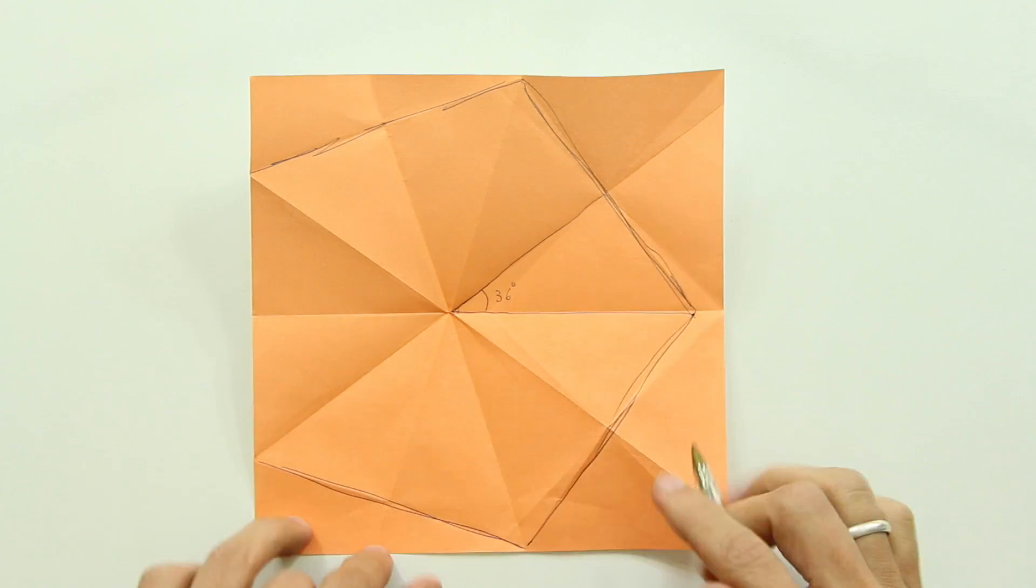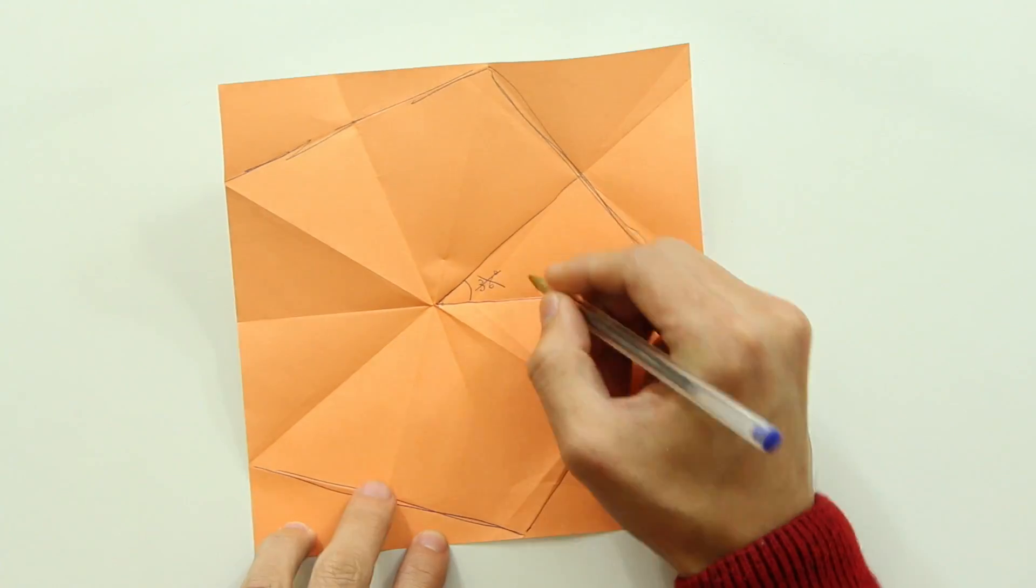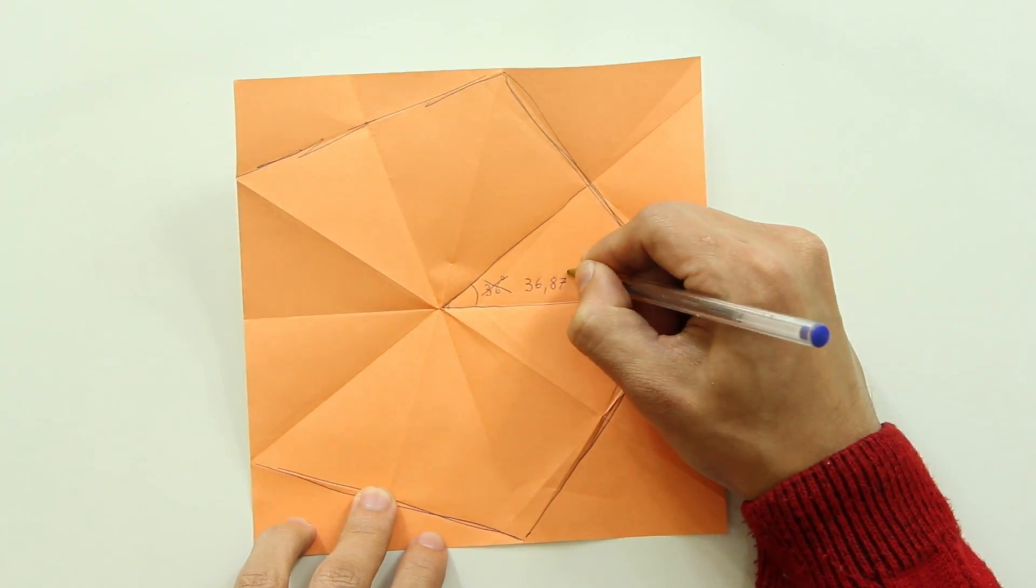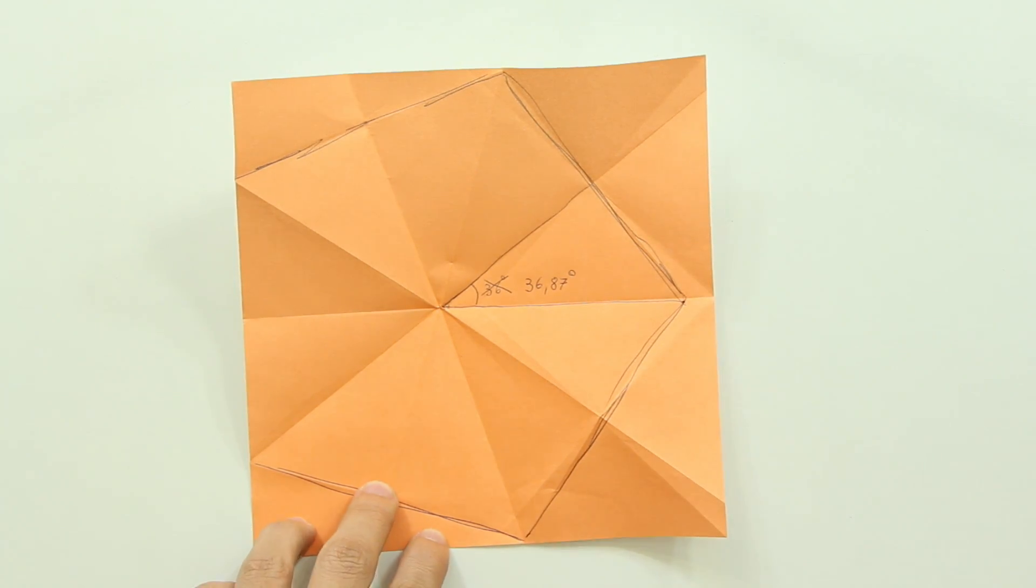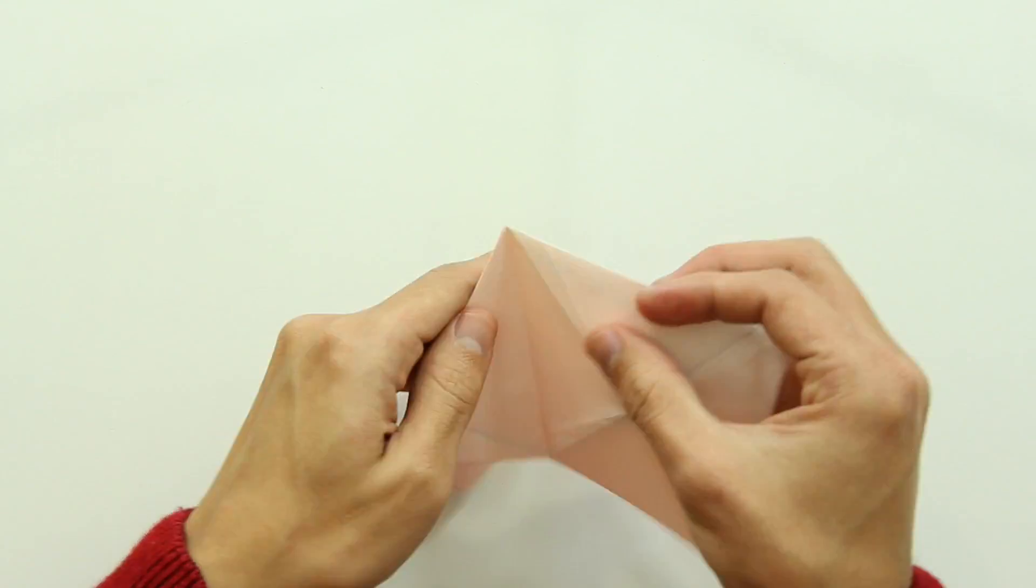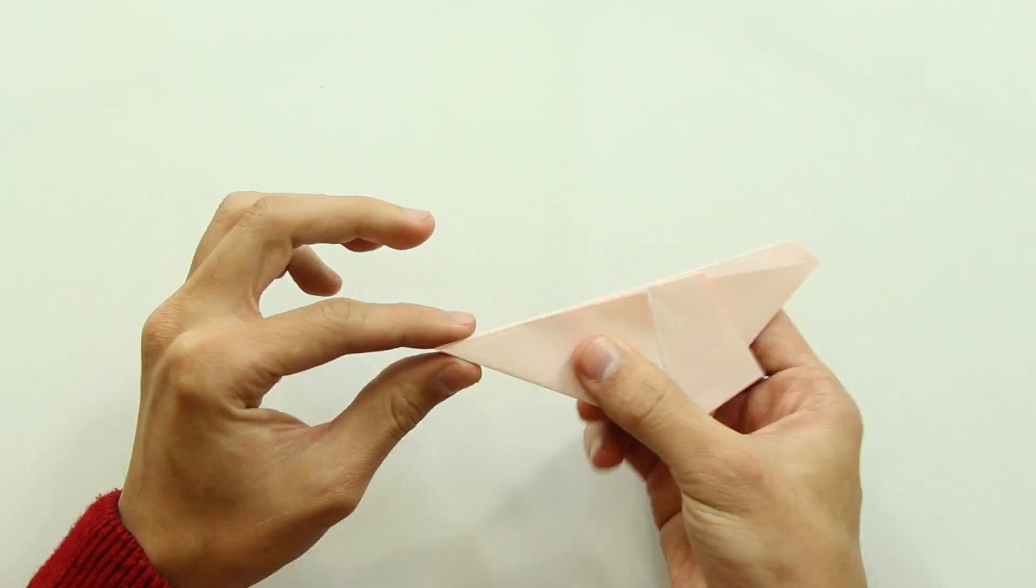Well, to be a regular pentagon, this angle here should be 36 degrees, right? But in fact it has about 36.87 degrees. But when you fold, you won't notice this less than 1 degree error.